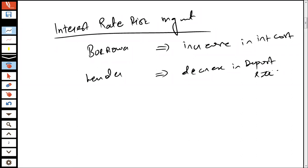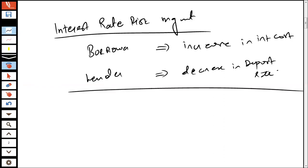When we talk about the concept of interest rate risk management, we are going to discuss from the perspective of both the borrower and the lender. A borrower is facing a risk that his interest cost would increase, while a lender is facing a risk that his deposit rates are going to go down. Both of them wish to hedge themselves against these risks, so we are going to introduce various techniques to hedge these borrowers and lenders.